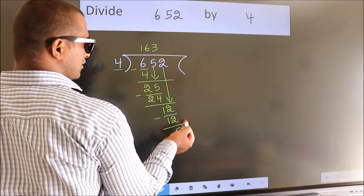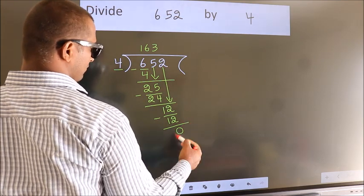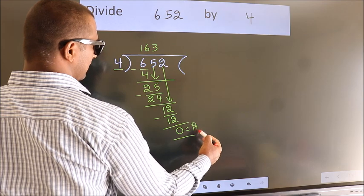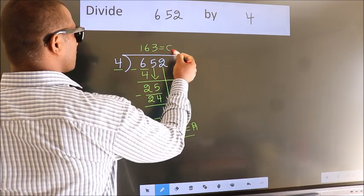No more numbers to bring it down. So we stop here. This is our remainder. This is our quotient.